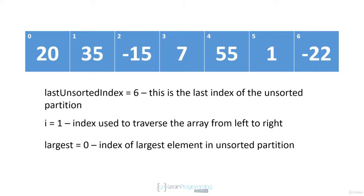We compare 35 to 20 — 35 is larger than 20, so we change 'largest' to one. Then we increment i to two and compare -15 to the largest element, now at position one. -15 is less than 35, so we just increment i to three. Seven is less than 35, so we increment i to four. We now compare 55 to 35 — 55 is greater than 35, so we change 'largest' to four, because the largest element found so far is at index four. We increment i to five, compare one to 55 — one is less — then increment i to six and compare -22 to 55, which is also less.